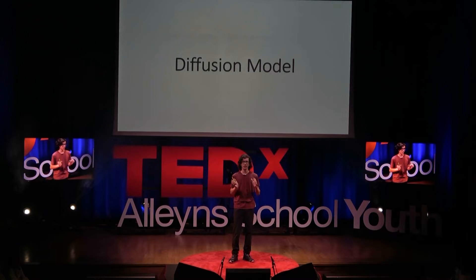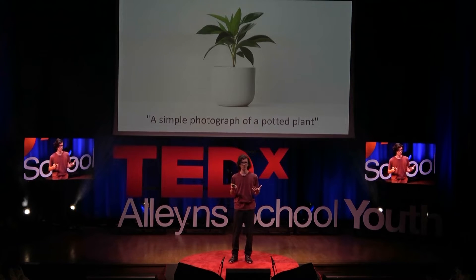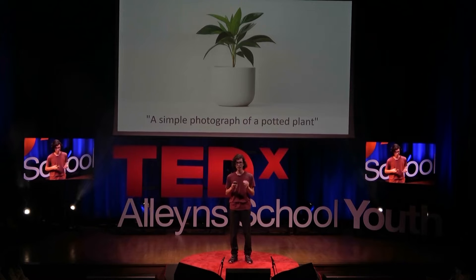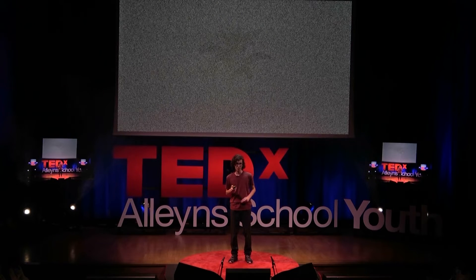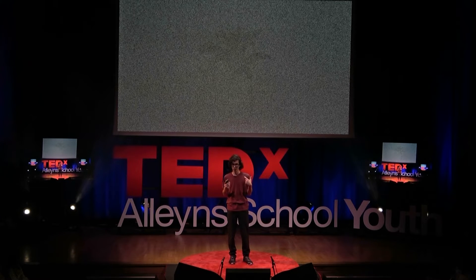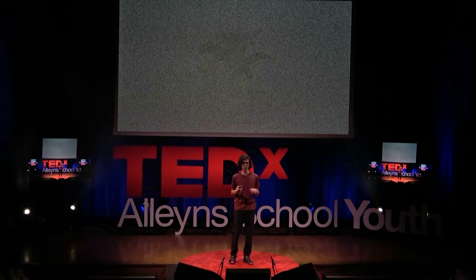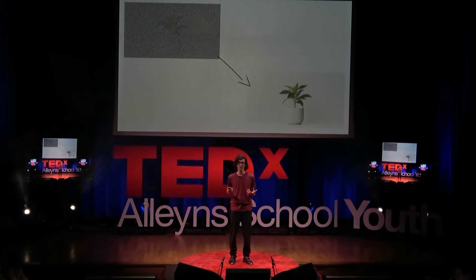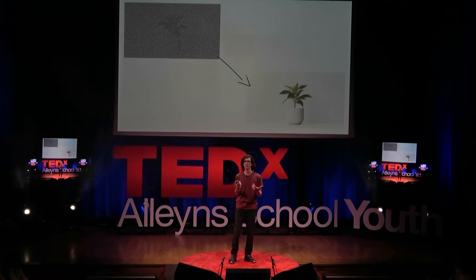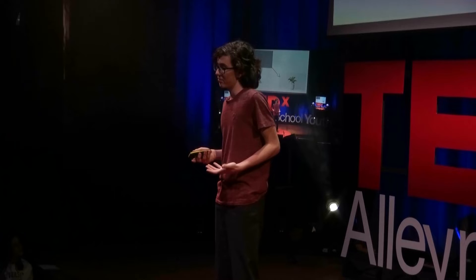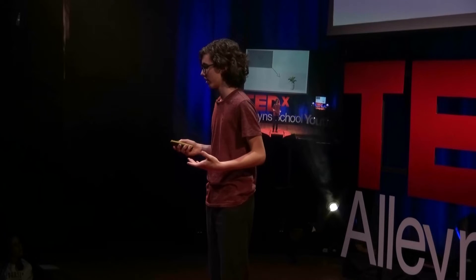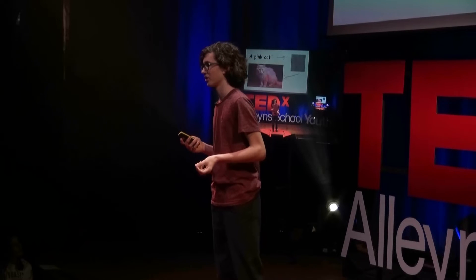The diffusion model works by being fed hundreds of millions of human images and artworks, each one with a caption describing what the image is of. The images are then noised, or effectively blurred, to the point where they just look like static. The AI then learns how to denoise the image, creating something that looks similar to the original. When provided with a text prompt, it searches its database for a noised image that best matches it, then denoises it, creating an entirely new image that matches what the prompt described.